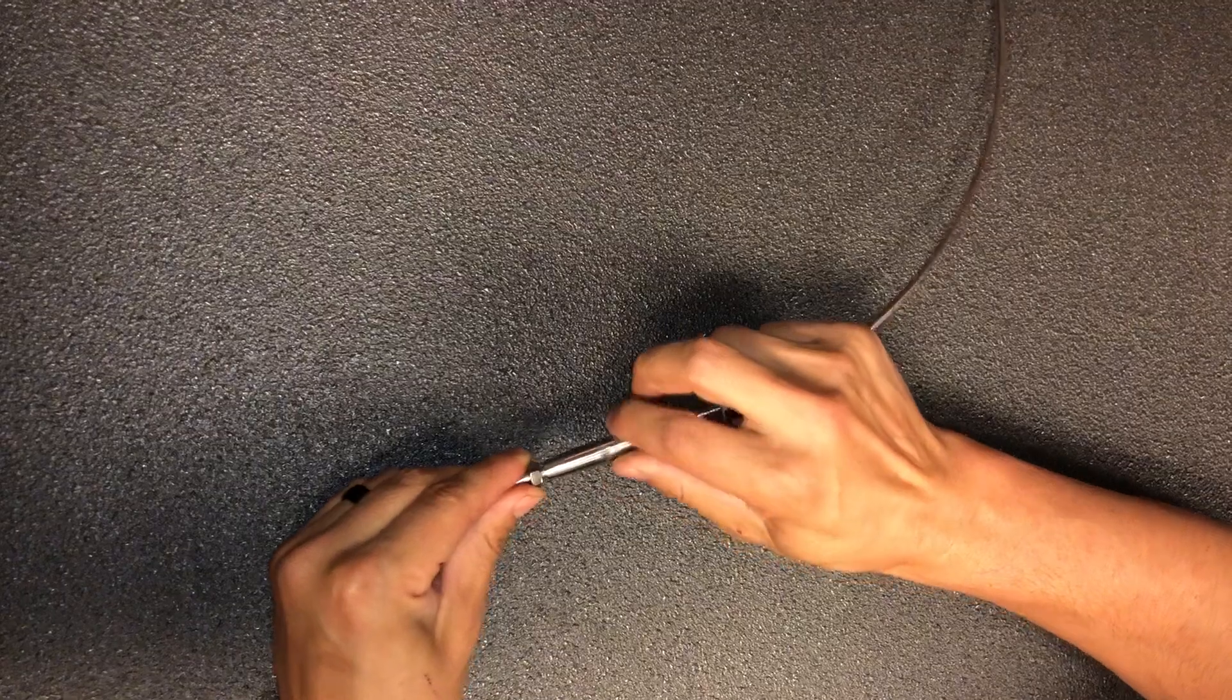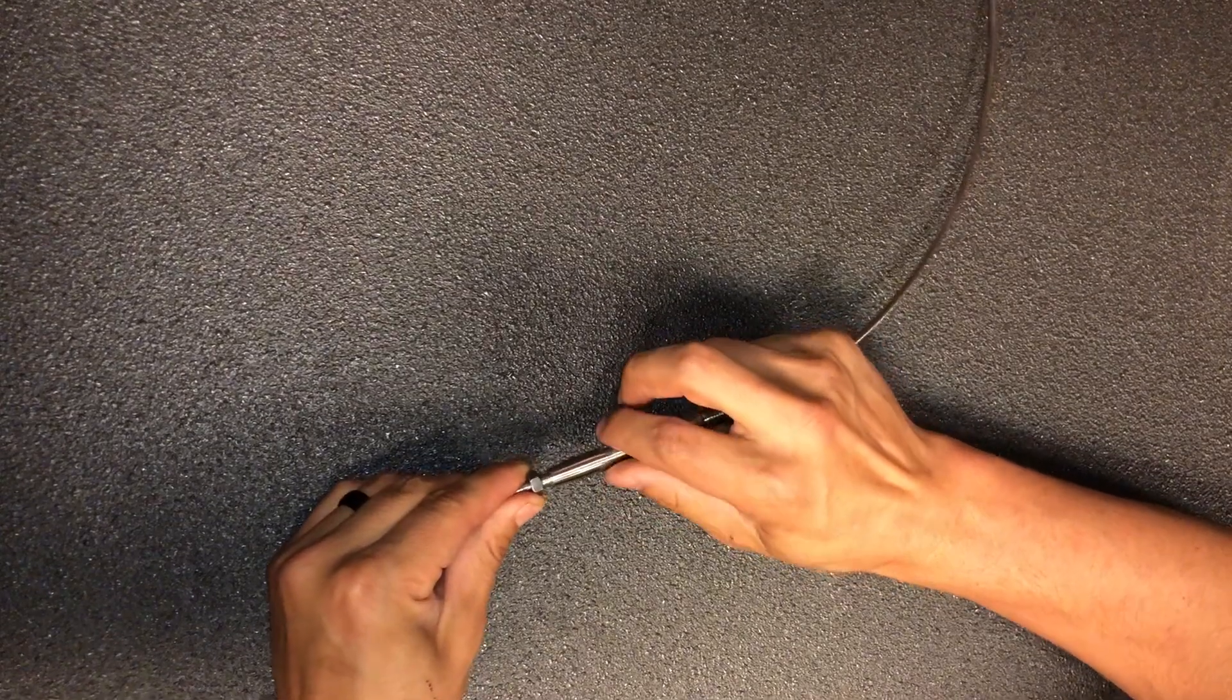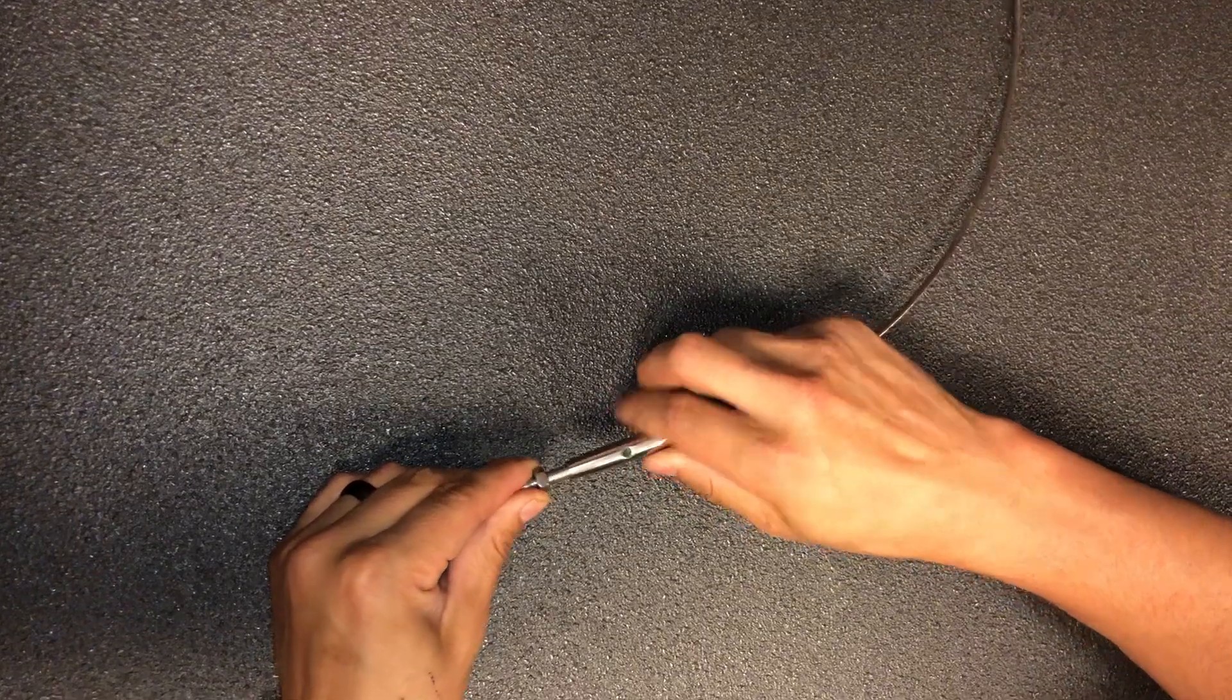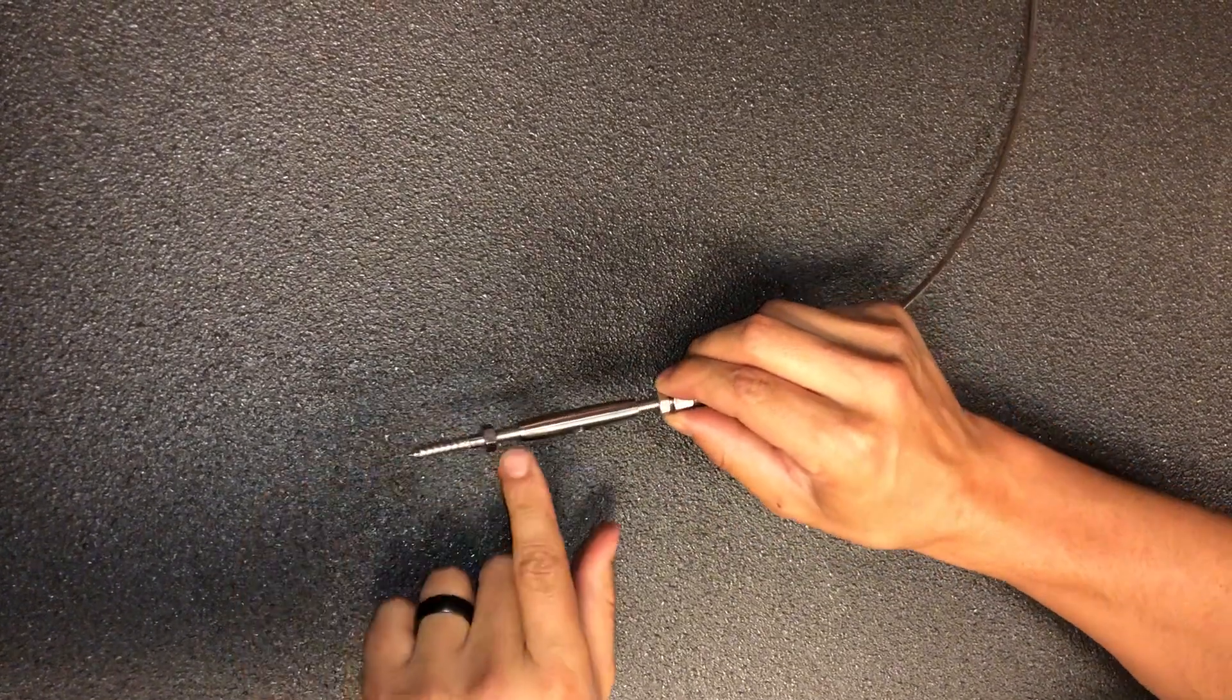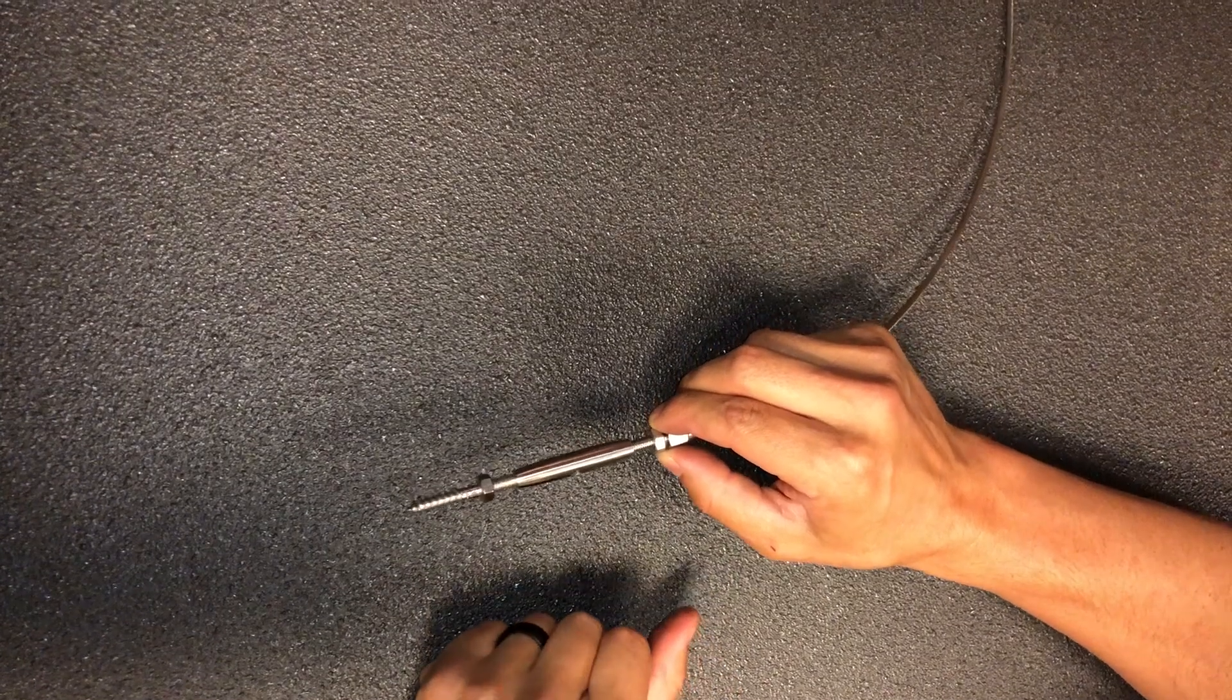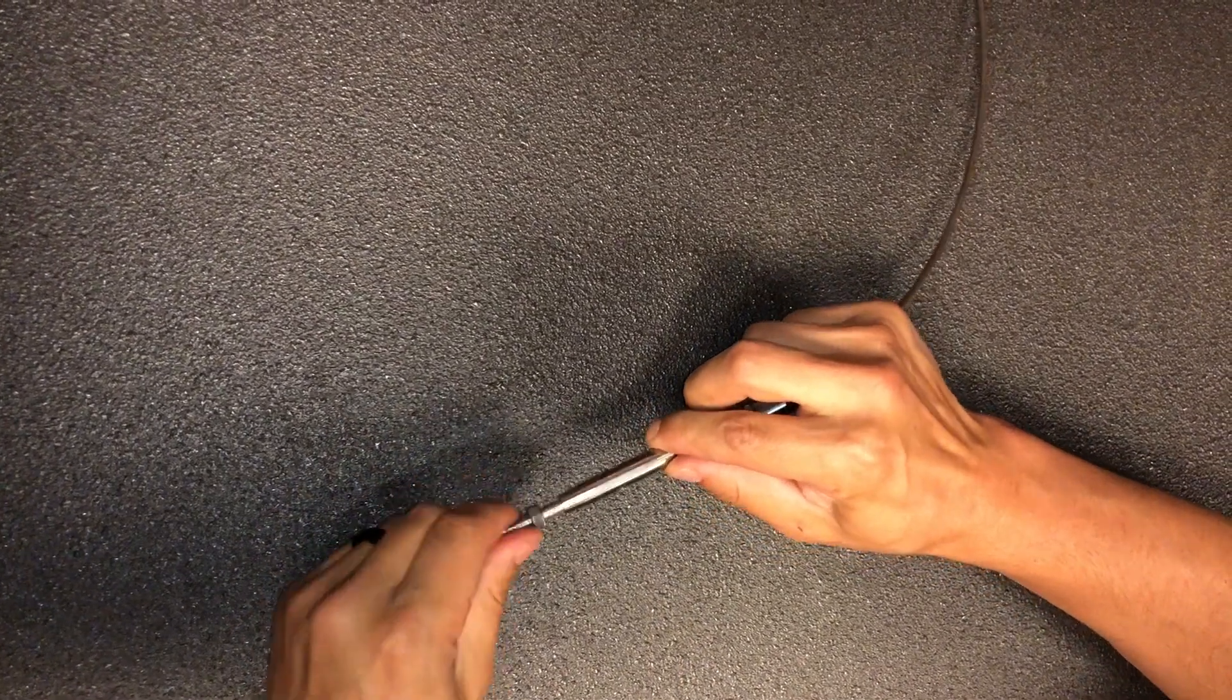And then yeah, key with turnbuckles is make sure that, I always like to install the terminal end first, but with turnbuckles you want to make sure that there's an equal amount of threads when you're ready on both sides of the barrel. That's super important because otherwise, let me give you an example, say you leave it like that.